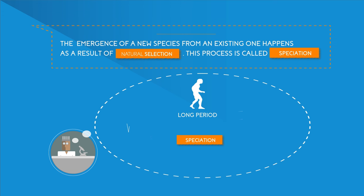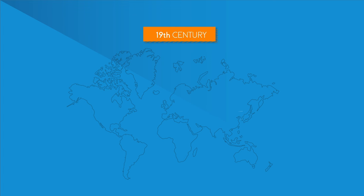Some scientists believe that speciation occurs continuously over long periods of time, whilst others believe that speciation occurs only rarely and in relatively short bursts, sometimes as a result of a dramatic environmental event.